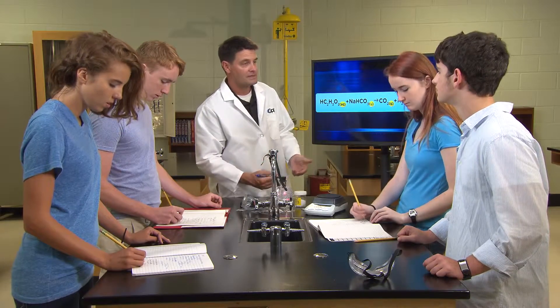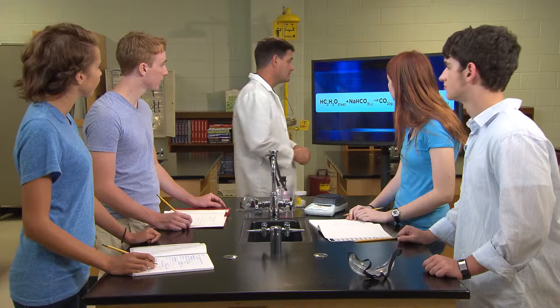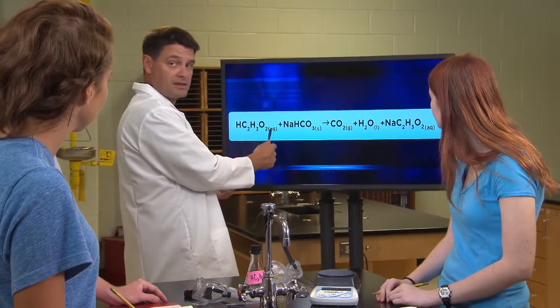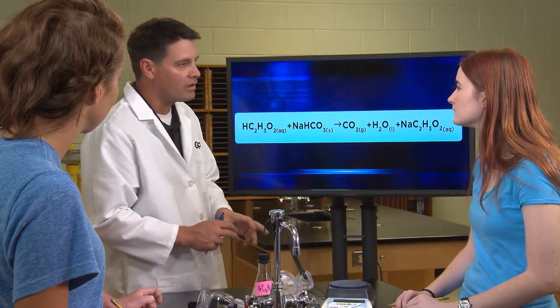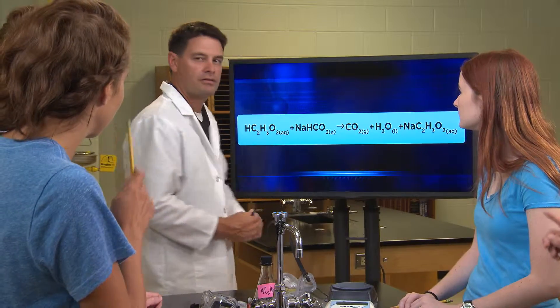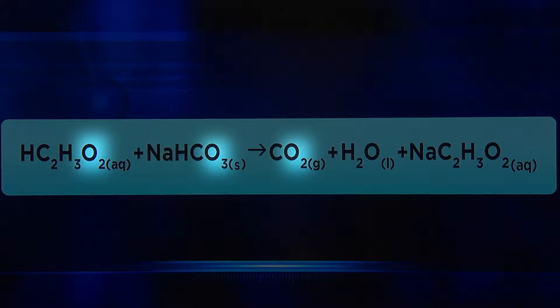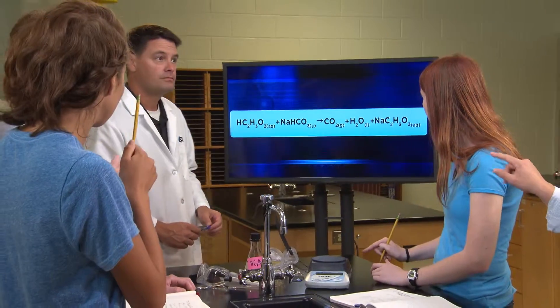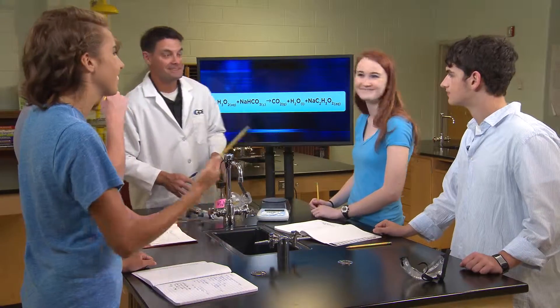The 'balanced' part comes from having the same number of atoms on each side of the arrow. Count the sodium atoms — there's one on the reactant side and one on the product side. Now check oxygen carefully, adding up all oxygen from each side. There are five on each side: two in carbon dioxide, one in water, and two in sodium bicarbonate. You'll also find three carbon atoms and five hydrogen atoms on each side of the equation.